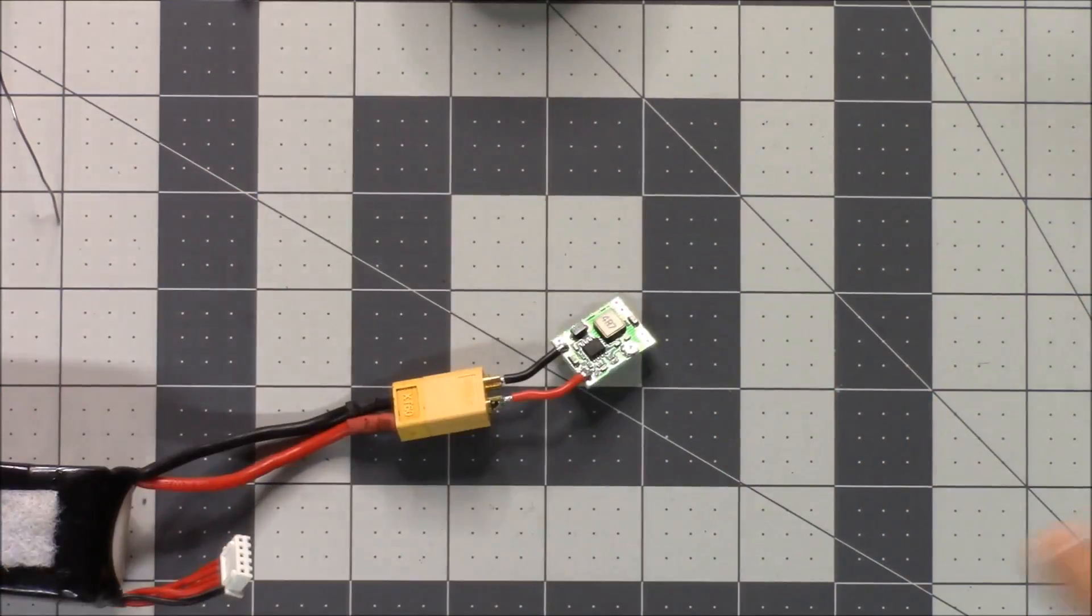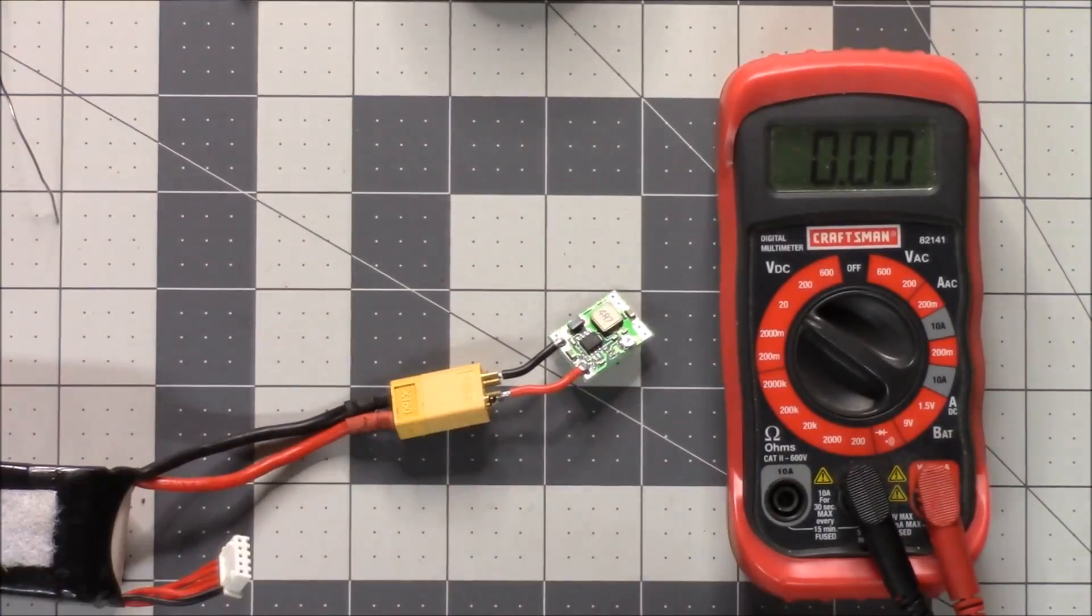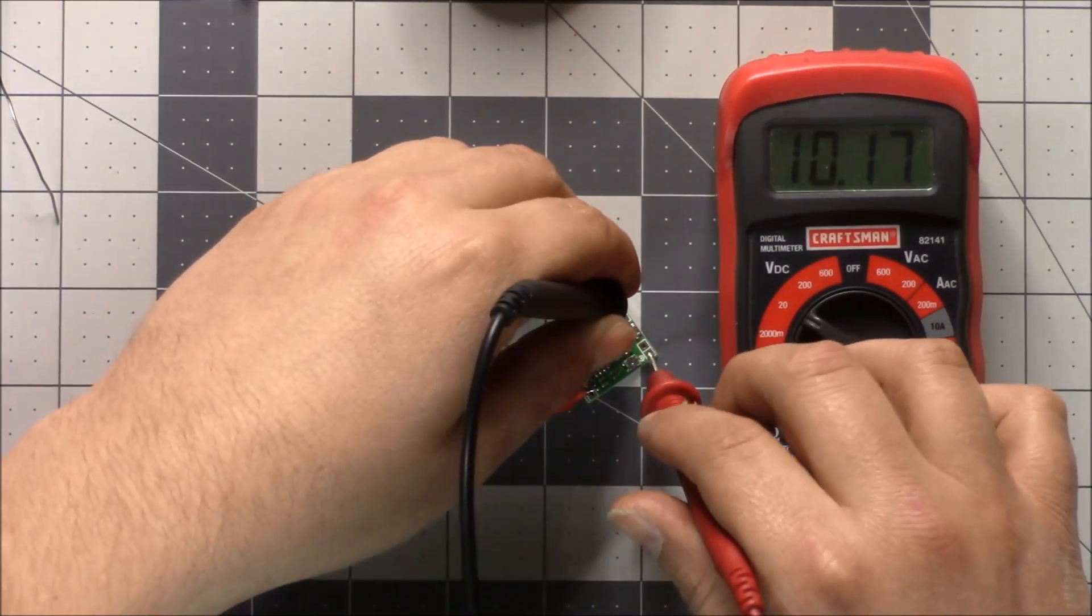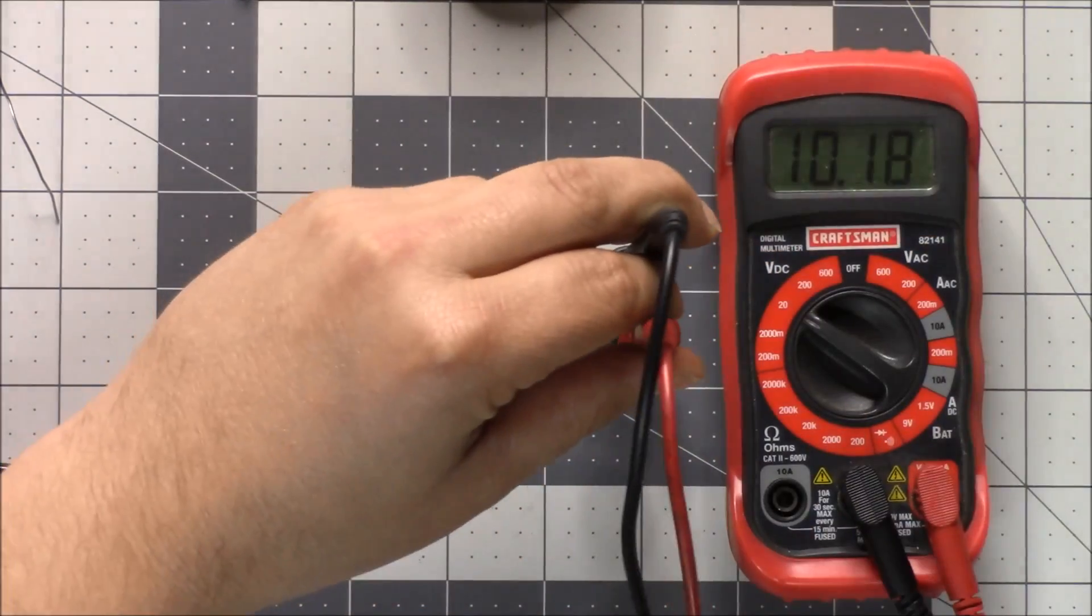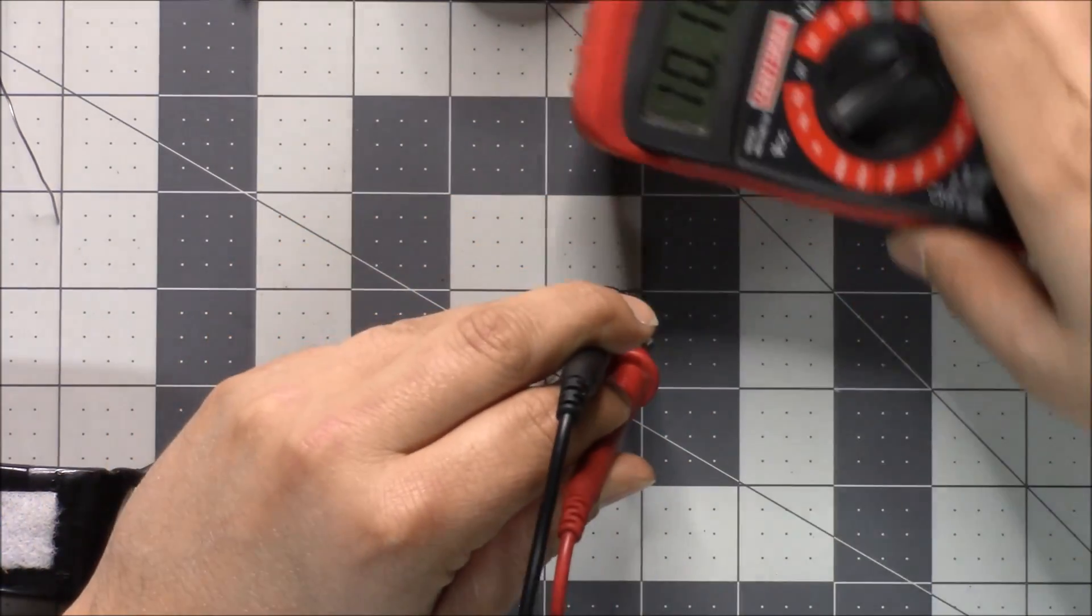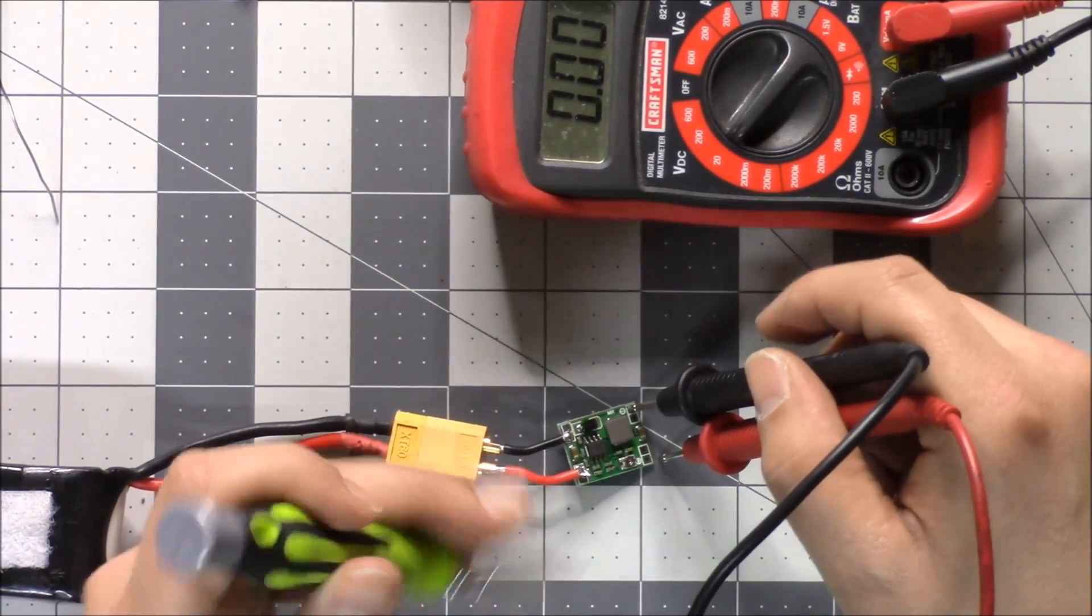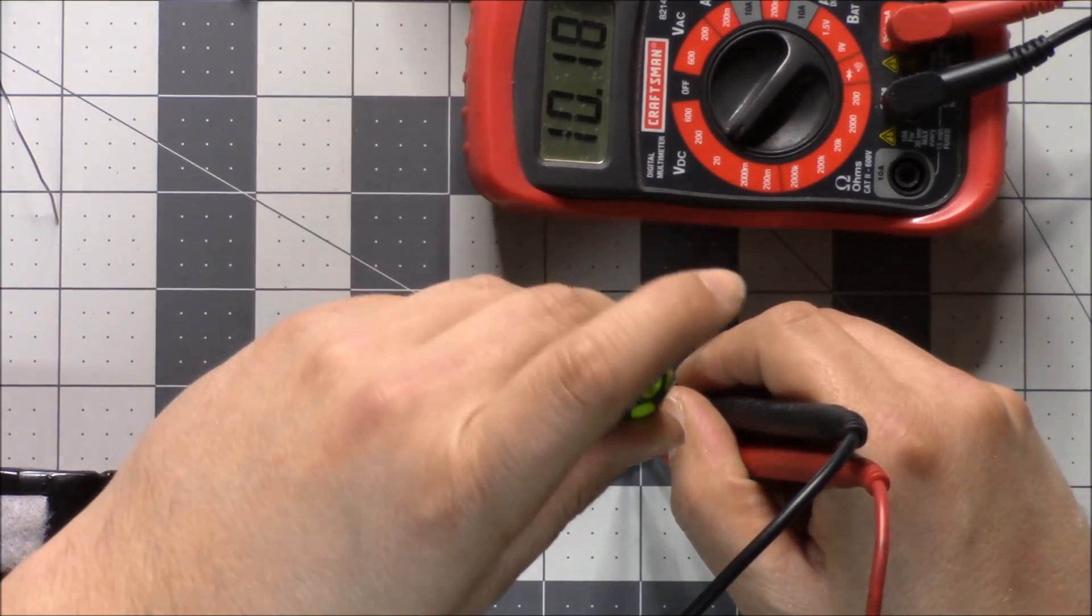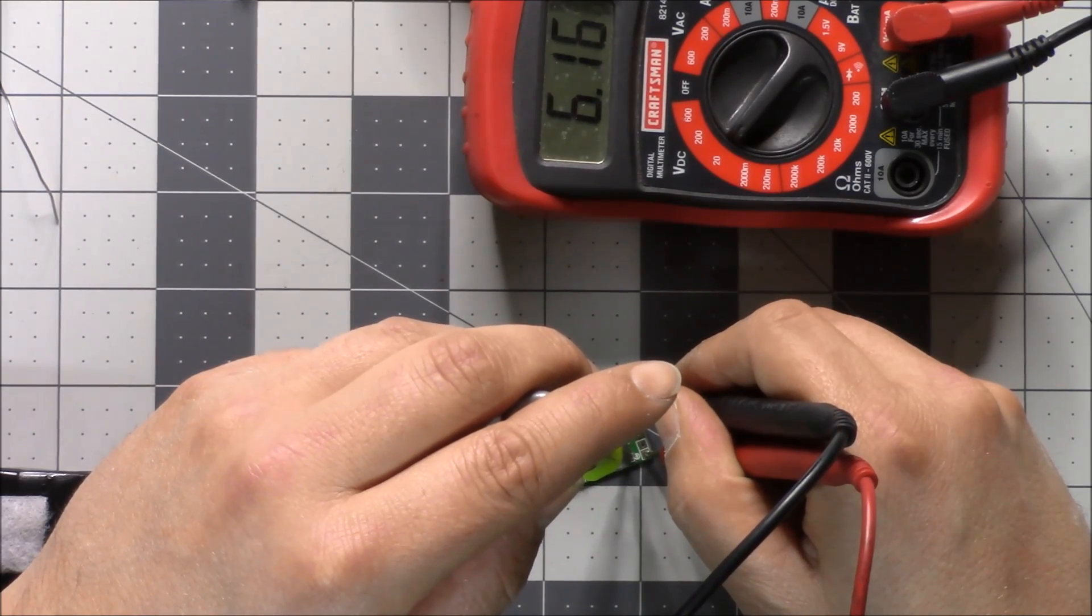I'll solder these on there and these joints don't have to be great, this is just for me to set the voltage. Now I'm going to check again, minus plus. Now I can plug something into it. Now we're going to set the voltage by pulling out our multimeter and measuring the output. We're going to measure the output voltage on DC volts from positive to negative.